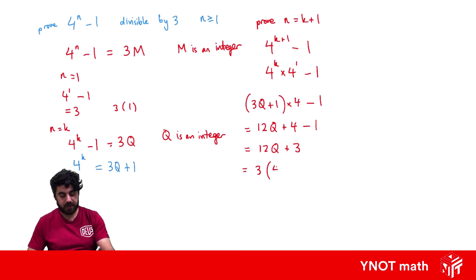And now we can factorize out of 3. We're going to get 4q plus 1. And now our statement of 4 to the power of k plus 1 minus 1 has turned into 3 times 4q plus 1.